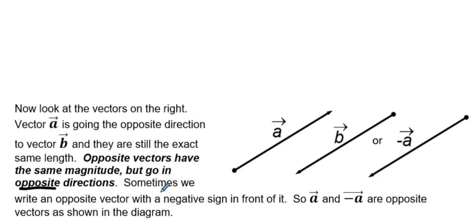Sometimes we write an opposite vector with a negative sign in front, and so vector a and negative a are opposite vectors as shown in this diagram.